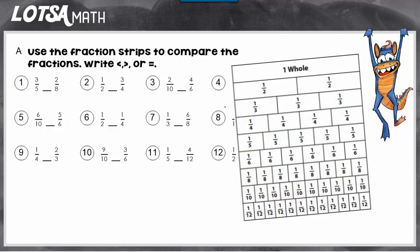Let's look at another one. On number two, we have one half and three fourths. So one half would be right here, and three fourths would be right here. You can see that three fourths is bigger than a half, so three fourths is greater than one half.